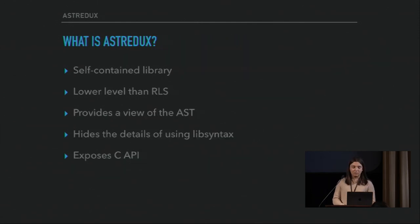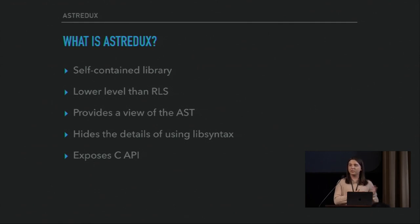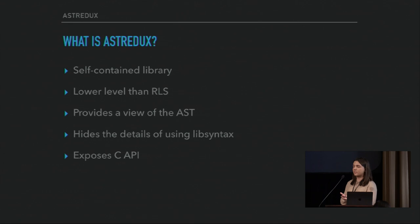So what is AST Redux? It's a self-contained library, somewhat similar to libclang or CPython's AST library. It's a bit lower level than RLS — with RLS you would ask the language server something like 'tell me all the declarations for this symbol' or 'tell me all the usages,' and RLS would give those to you. Here, it's more like 'here's a bunch of symbols, you figure out what to do.' It provides a view of the abstract syntax tree of the code, exposes this as a C API, and hides the details of working with libsyntax.